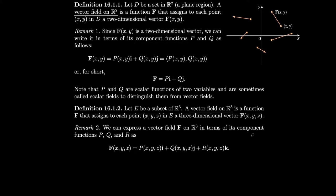Let E be a subset of R3. A vector field in R3 is a function F that assigns to each point (x, y, z) in E a three-dimensional vector F(x, y, z). It's pretty much the same thing — we just draw the arrows in 3D space. We can also express vector fields on R3 in terms of their component functions; we just throw in R for the k component.